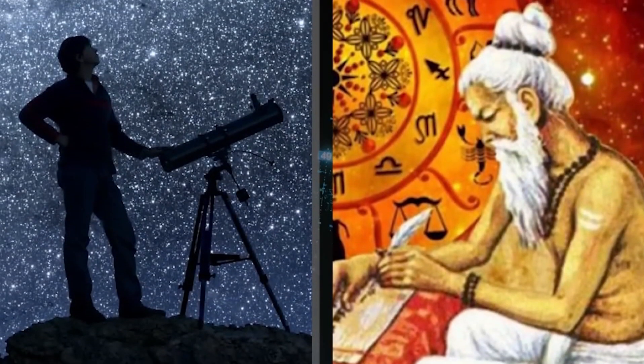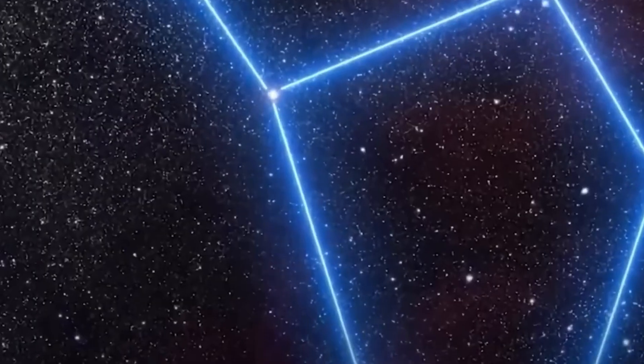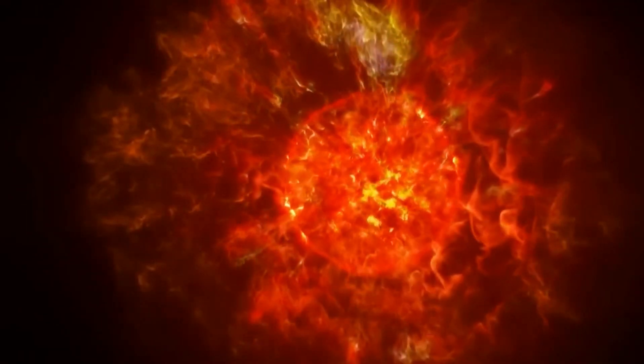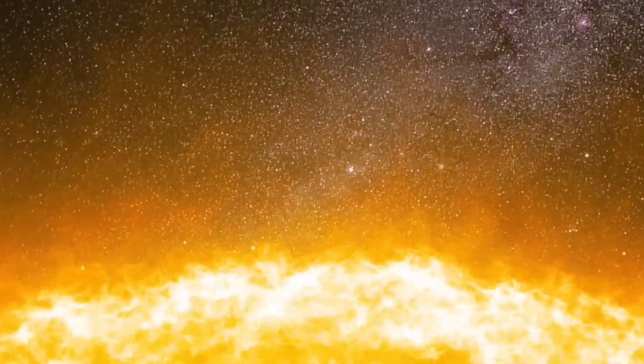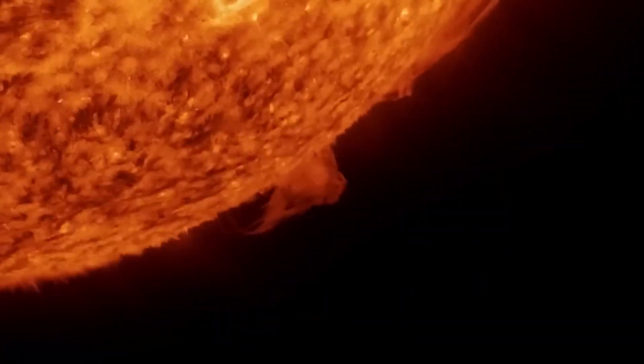The unique thing about Betelgeuse is that we can actually see its surface, which isn't the case for most other stars. This gives us an incredible opportunity to learn about how big stars like Betelgeuse behave as they get older, including these kinds of surprising mass ejection events.